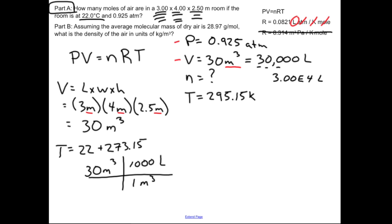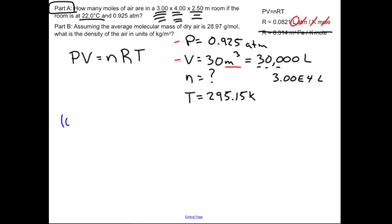Now we're ready to just plug in. I'm going to clear some of this board space. My pressure is 0.925 atm. Volume next, 30,000 liters. That's going to be equal to the variable n that I'm solving for times R, 0.0821 liters atm over kelvin mole. And then finally my temperature, 295.15 kelvin.